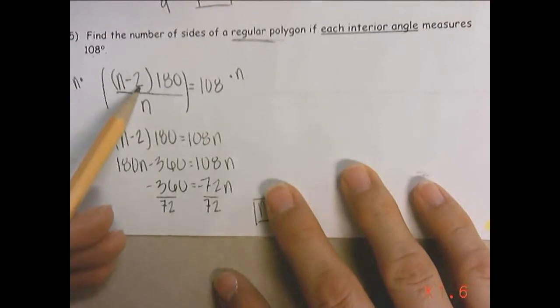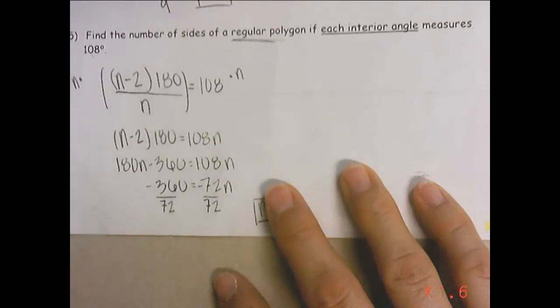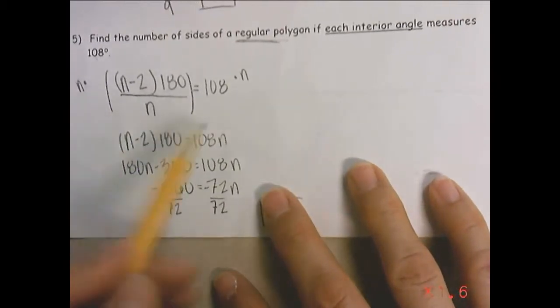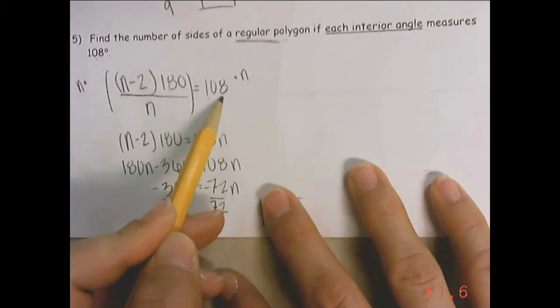So we're going to use this formula. N minus two times 180 divided by n. Remember, we don't know n because that's the number of sides. But we do know that each angle equals 108.